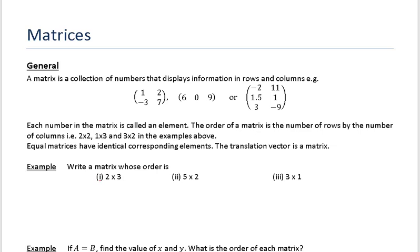So this number 1 here, this is the element which is in the first row, first column. This minus 3, this is the element which is in the second row, first column.